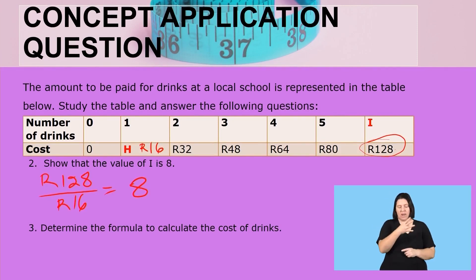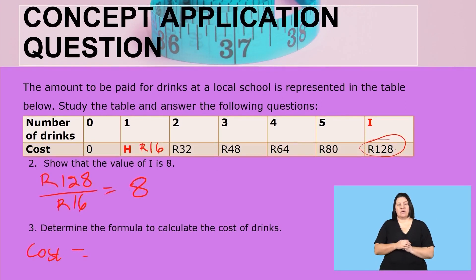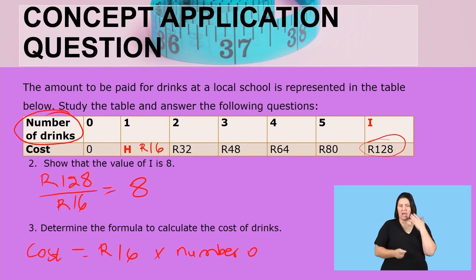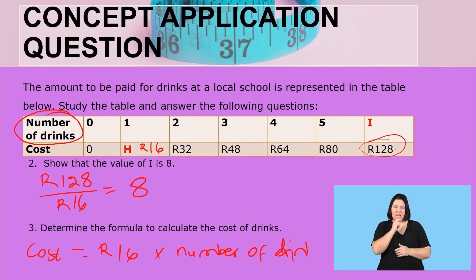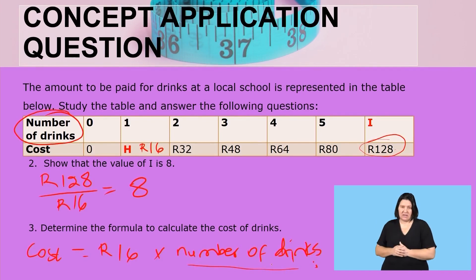Determine the formula to calculate the cost of drinks. The cost of drinks equals 16 rent multiplied by the number of drinks. We don't become specific — we represent it with the independent variable. So if the number of drinks is one, you substitute with one; if it is two, you substitute with two, and so on.